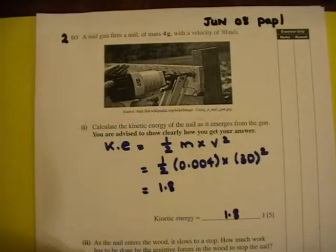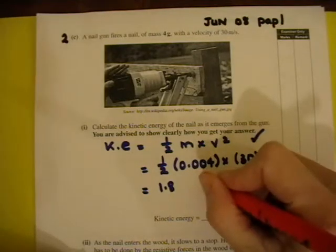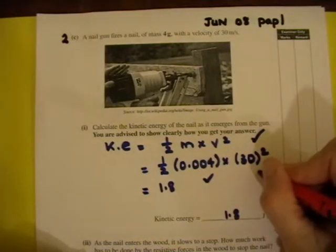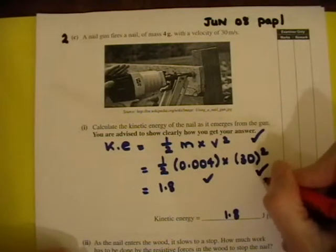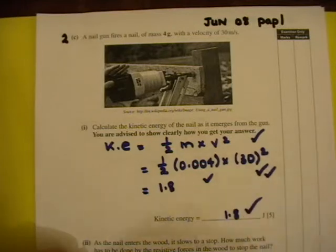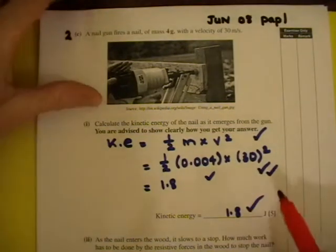Now, if you did forget to change this, you'll only lose one mark. You get one mark for your equation, a mark for changing that and multiplying by 30 squared - in fact, you get two marks for that - and your fifth mark for your answer. So you get 4 out of 5, provided you've shown everything else.